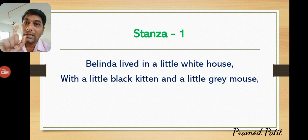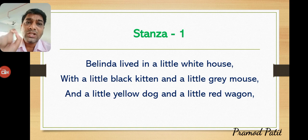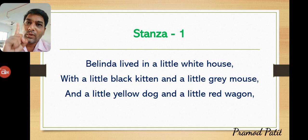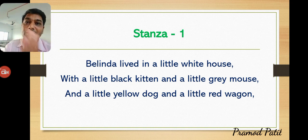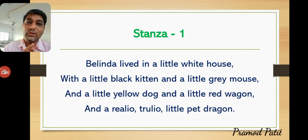The kitten and mouse are opposite animals living together. The third pet is a little yellow dog, and the fourth is a little red dragon. These four animals represent four classes of society. The kitten, gray mouse, yellow dog, and little red dragon each represent a different class — the dragon representing the middle class or lowest class of society.